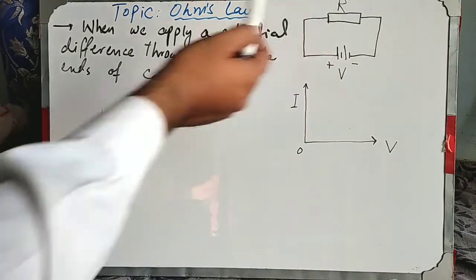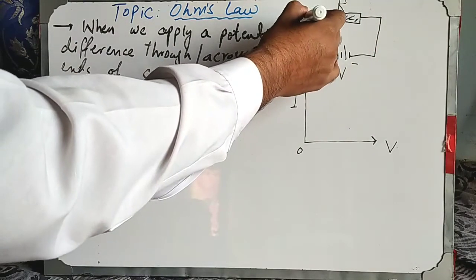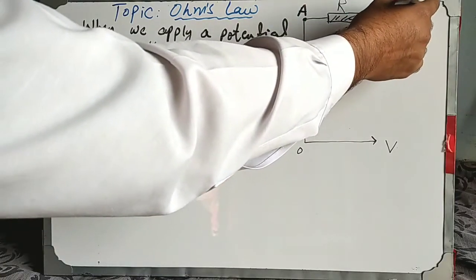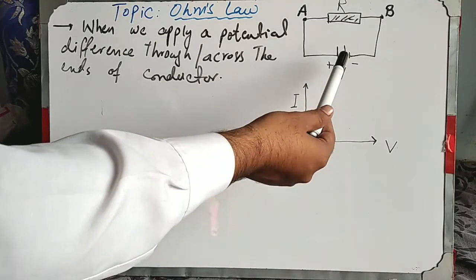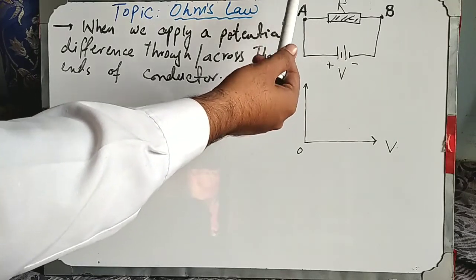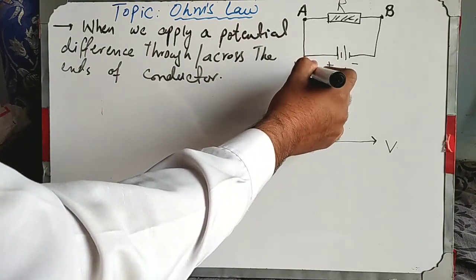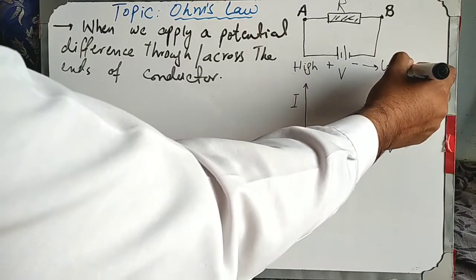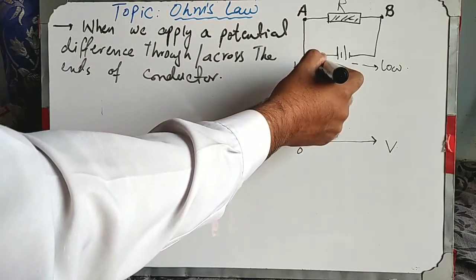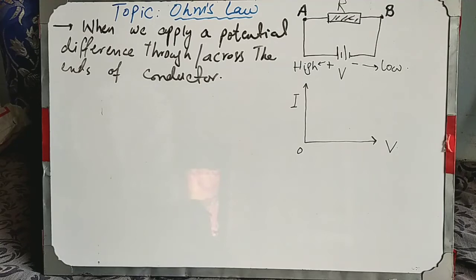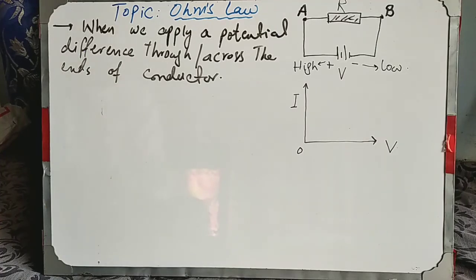For example, we have a particular device. This is a device. We are giving the ends of this device the names A and B. We apply a potential source, which is a battery. The positive terminal is connected at point P — positive is considered as the high energy point, and negative is the low energy or low potential point.